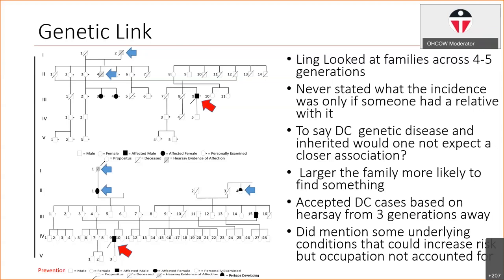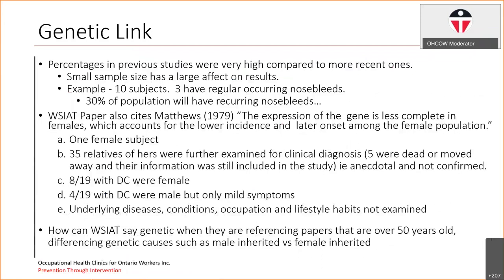This paper also did mention some underlying conditions that could increase the risk, but occupational factors — such as what do you do for a living — were not asked. As mentioned, the percentages were very small and sample size has a really large effect on results. For example, if I had 10 subjects and three of them had regularly occurring nosebleeds, my results would say 30% of the population will have regularly occurring nosebleeds — which isn't actually true. That's why small sample sizes really have to be watched.